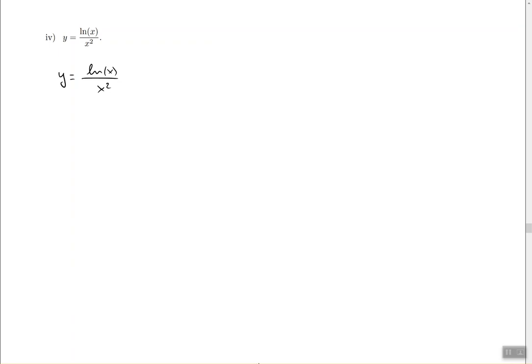Okay, again we're looking for the derivative, and this time we have ln of x divided by x squared. The division sign tells me that we have a quotient rule, so that's because of the division sign right there.